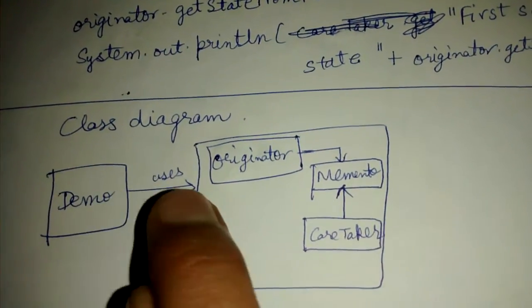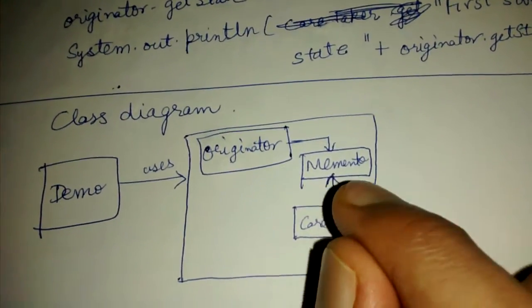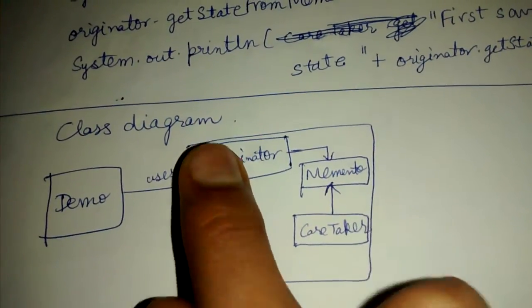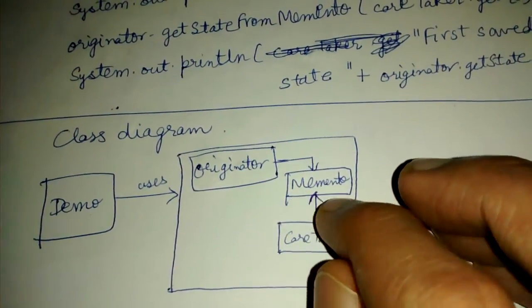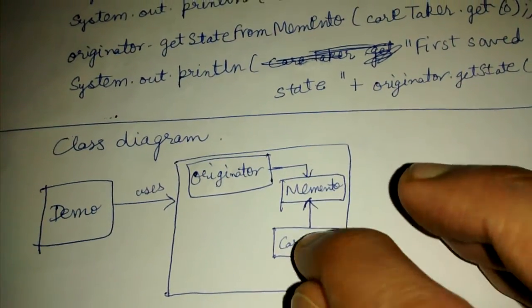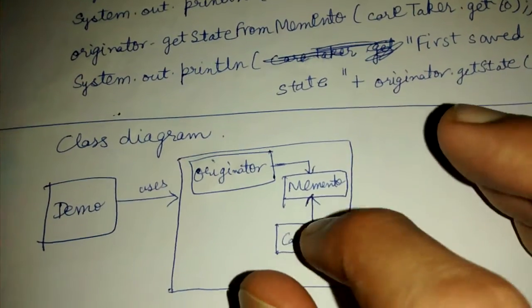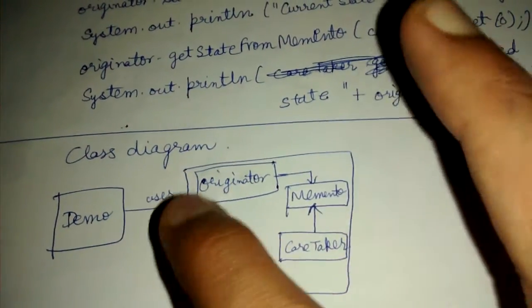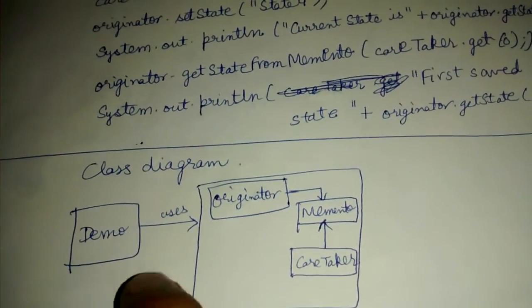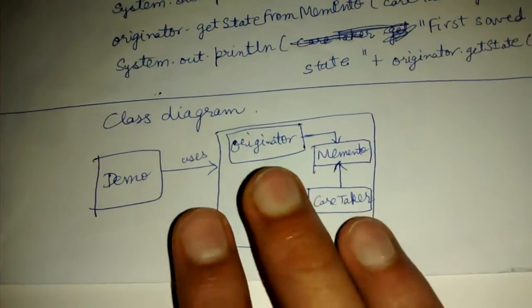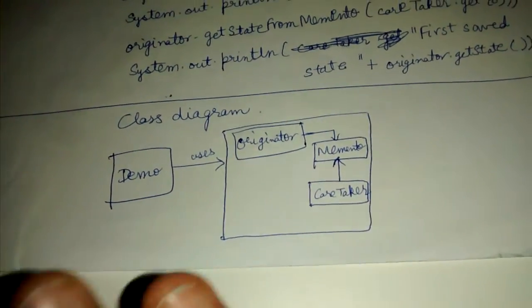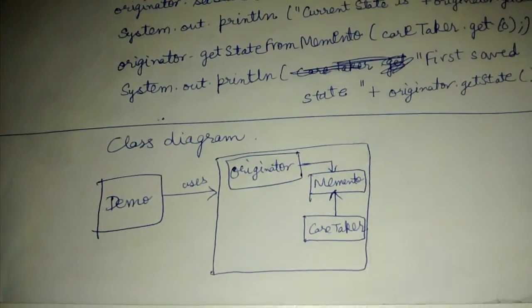Let's look at the class diagram quickly. The memento is at the heart of the system. The originator saves states to a memento, and the caretaker maintains a list of mementos. The demo class uses all of them. As shown in the Linux snapshot example, this pattern is useful wherever we want to revert our state back to a previous state.